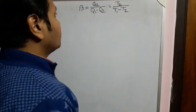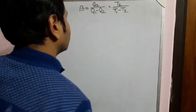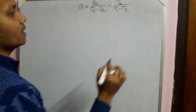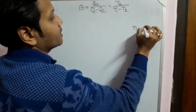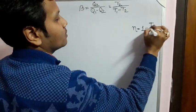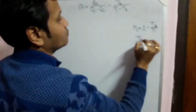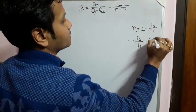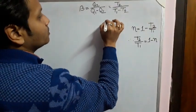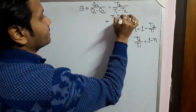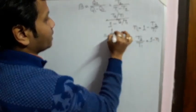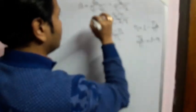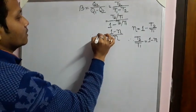The first question that arises is: what is the relation between eta and beta? Eta means the efficiency of a Carnot engine and beta means the efficiency of a refrigerator. We know that the efficiency of a Carnot engine is eta equals 1 minus T2 upon T1, from which we can write T2 upon T1 equals 1 minus eta. Dividing through by T1 gives us 1 minus T2/T1 equals eta, which establishes the relation between beta and eta.